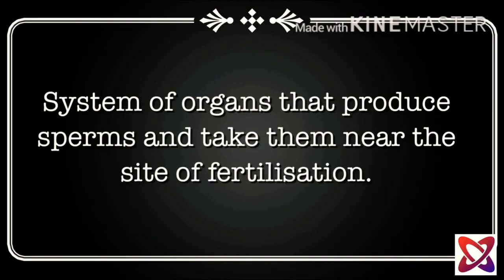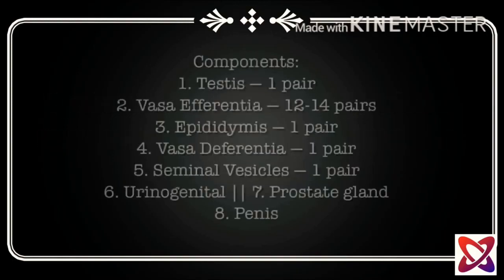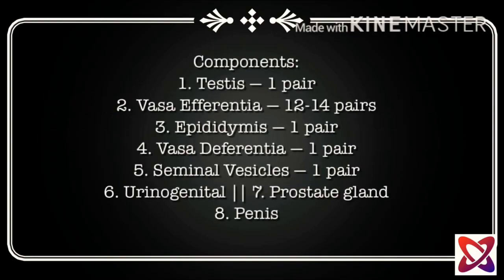Now let's discuss the components of the system. There are eight components: testes with one pair, vasa efferentia with 12 to 14 pairs, epididymis with one pair, vas deferentia with one pair, seminal vesicles with one pair, urinogenital duct, prostate gland, and penis.